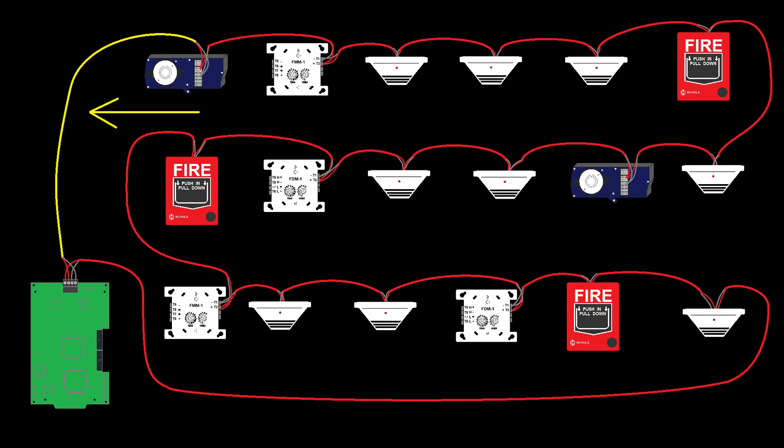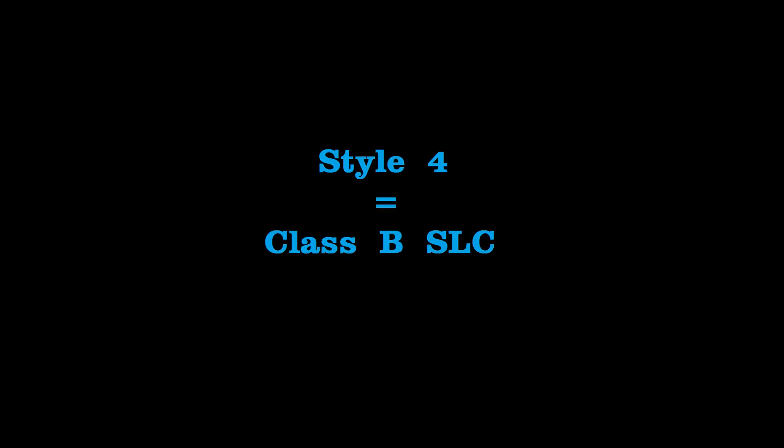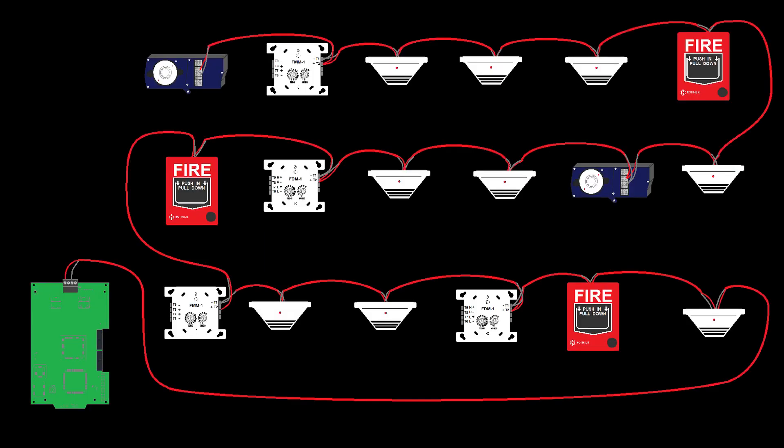We're going to remove this return leg of the circuit. Now we have an example of a style 4 or Class B loop. It's style 4 because it does not return back to the panel after the last device. If I had a single wire open at any point in this circuit, any device after that point on the loop would no longer be able to communicate with the panel.